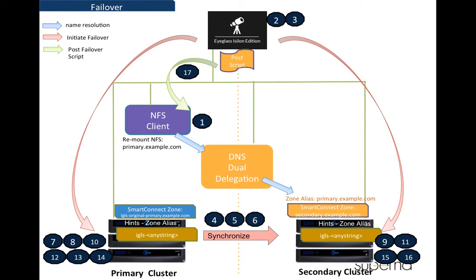The next diagram is for the failover process. I will only highlight some of the numbered processes here. For more details you can refer to eyeglass online documentation. Process number 2 is to initiate failover. In this demo we will show the example of using the eyeglass API to initiate this failover process. Process number 17 is the Pulse failover step. The eyeglass failover job will execute the Pulse failover script to refresh the NFS session on the client side.